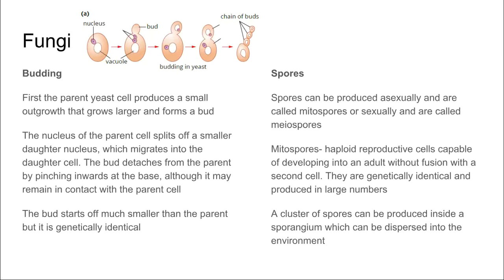When we look at fungi, they undergo budding and the production of spores. Budding in the case of fungi is when the parent yeast cell produces a small outgrowth that grows larger and forms a bud, which we can see in the picture above. The bud eventually forms a chain of buds and then can detach from the parent. However, sometimes it does remain in contact with the parent cell, and as it's growing it starts off much smaller than the parent.